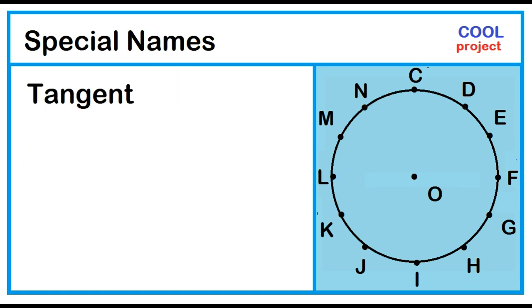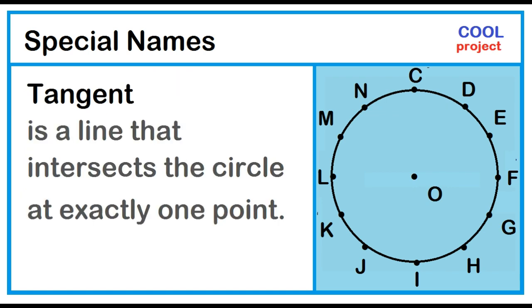Tangent. Tangent is a line that intersects the circle at exactly one point. Example: Line C-P. Point C is the point of tangency.